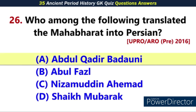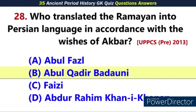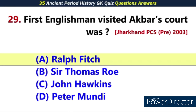Q26. Who among the following translated the Mahabharata into Persian? Answer: A. Abdul Qadir Badauni. Q27. The Persian translation of the Mahabharata has the title — Sikandara. Q28. Who translated the Ramayana into Persian language at the orders of Akbar? Answer: B. Abdul Qadir Badauni.